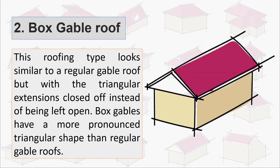Second we have box gable roof. This roofing type looks similar to a regular gable roof but with the triangular extensions closed off instead of being left open. Box gables have a more pronounced triangular shape than regular gable roofs.